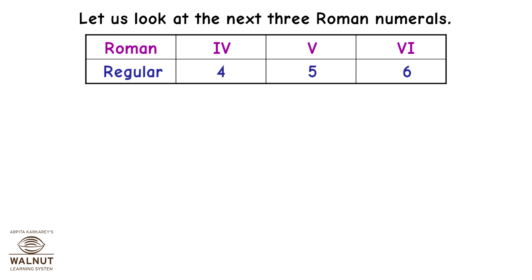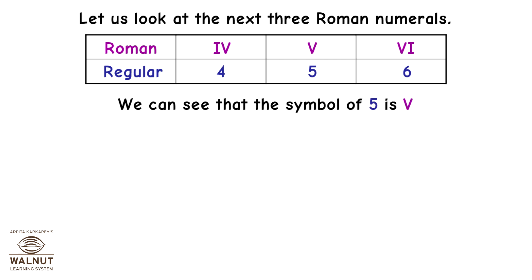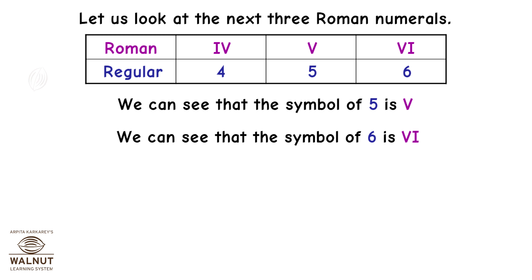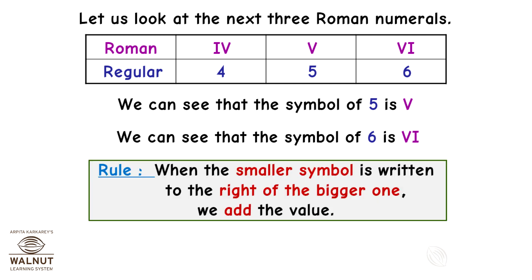Let us look at the next three Roman numerals: 4, 5, and 6. We can see that the symbol of 5 is V, and the symbol of 6 is VI. When the smaller symbol is written to the right of the bigger one, we add the value. So VI means 5 plus 1, which is equal to 6.